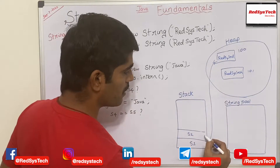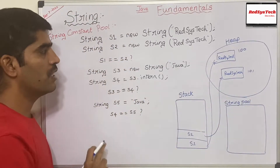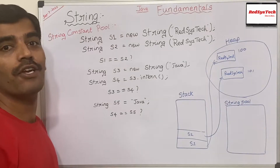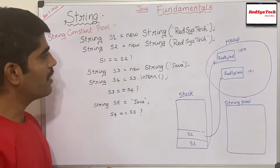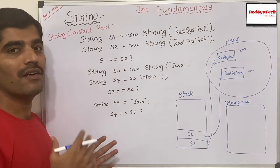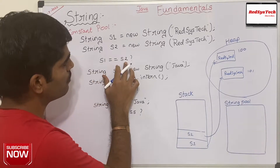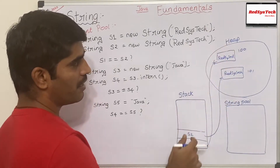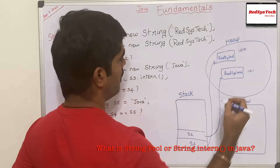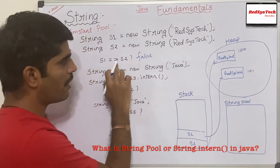So s2 is referring to address 101. When I say s1 == s2, as we saw in a previous video, the == operator compares address locations. Here, s1 and s2 both point to objects in heap memory but at different address locations — 100 and 101 — so it is definitely going to return false.